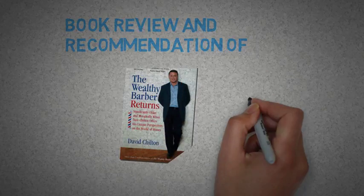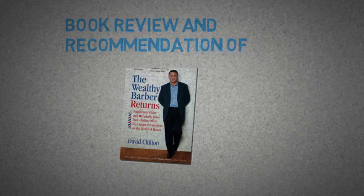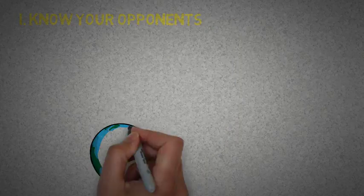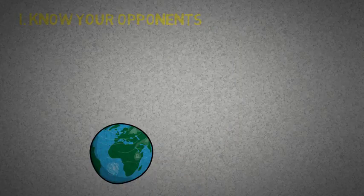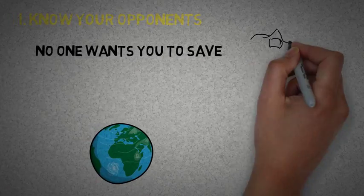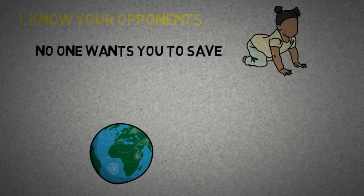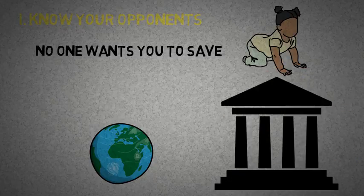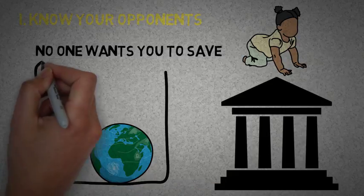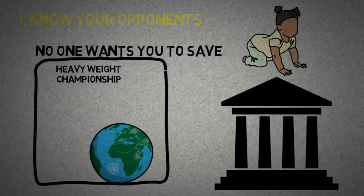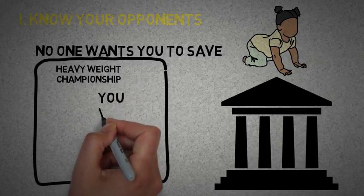Know your opponents. It's crucial to understand that no one wants you to save. Your friends want to go out, your kid wants that new toy, businesses want you to spend, the government needs you to spend for the economy to grow, and bankers want you to spend so they can lend you some more money. So it's literally a fight of you against the world. Understand this and you'll be more prepared for battle.